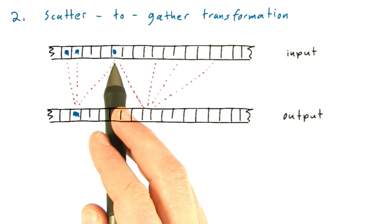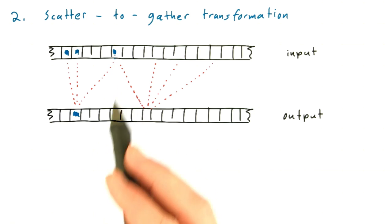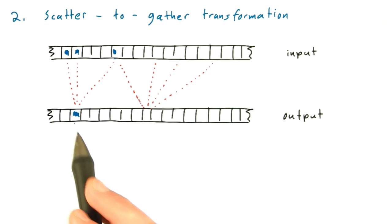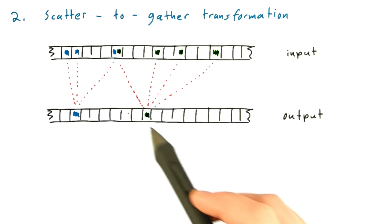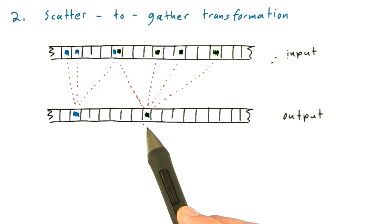In this example, the elements labeled blue in the input array are contributing to the blue element in the output array, and the elements labeled green in the input array are contributing to the green in the output array, and so forth.